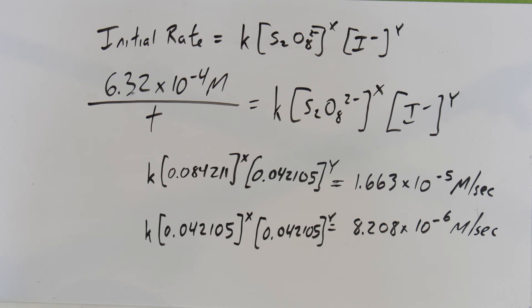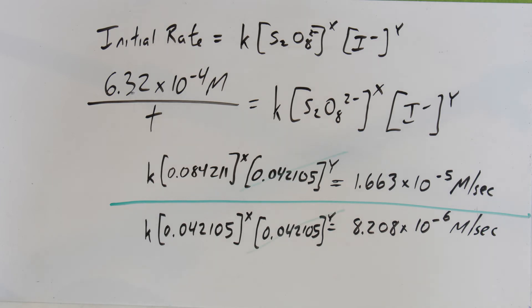Here's what the rate law looks like in equation terms for those two trials. Both are equal to the same rate constant times the concentrations with their orders. The reason we run kinetics trials this way is that we can put them in ratios to each other and cancel out many variables. One concentration was held constant — it cancels. The rate constant, as long as we don't change temperature, also cancels.